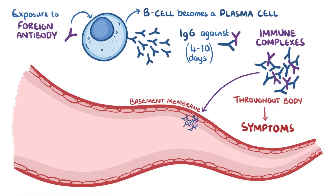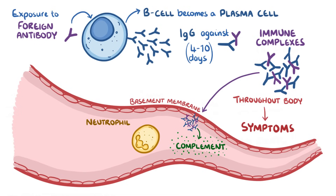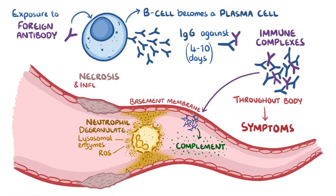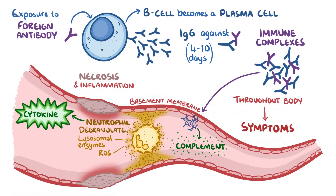All of this can happen in blood vessels throughout the whole body, which explains the various symptoms of serum sickness. Once these immune complexes are deposited in the basement membrane, they activate the complement system, which is made up of tiny proteins in the blood that attract nearby neutrophils. Neutrophils then degranulate, dumping lysosomal enzymes and reactive oxygen species (ROS) on the surface of the blood vessels, causing tissue necrosis and inflammation. They also release cytokines, which attract additional immune cells, producing both local and systemic inflammation.